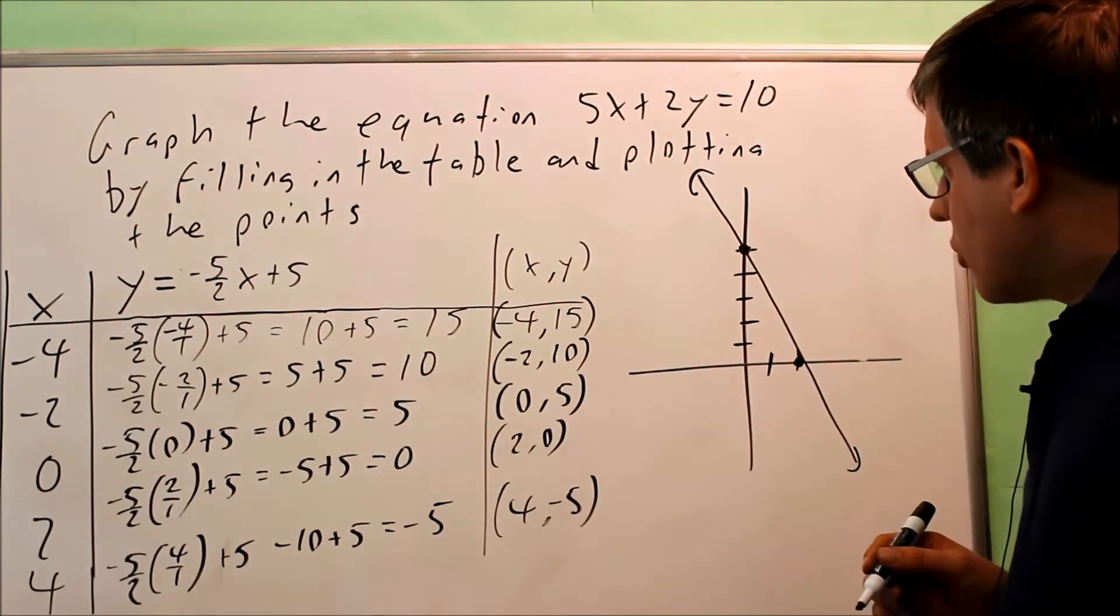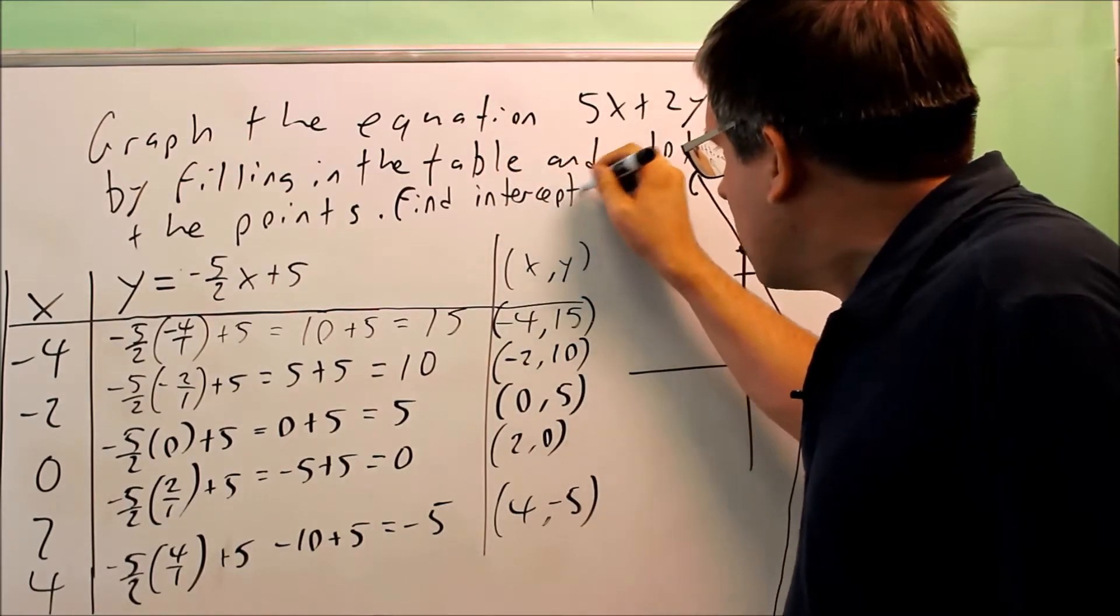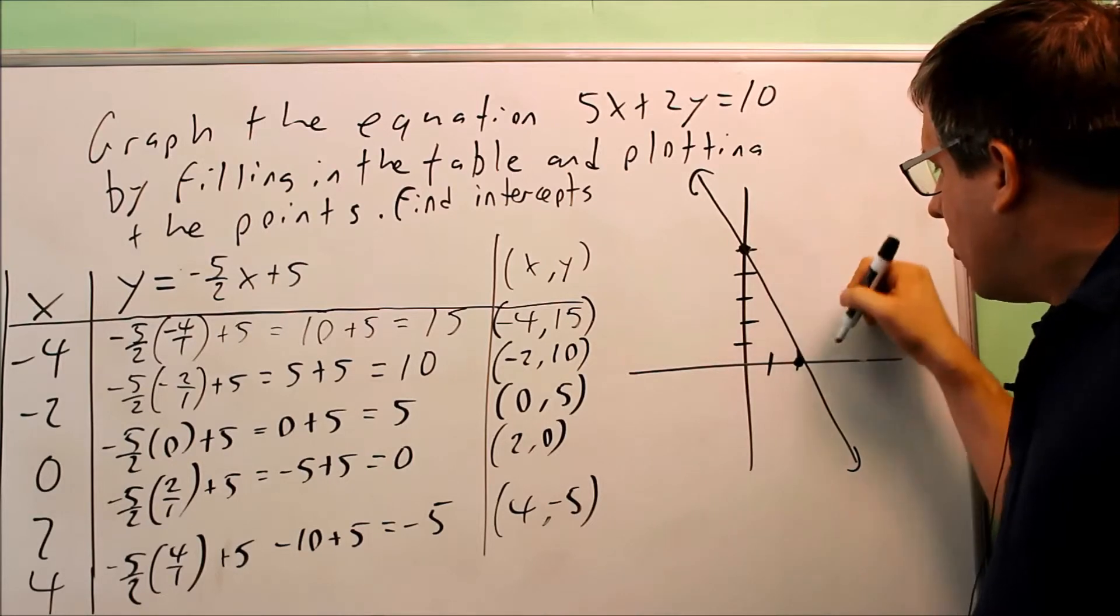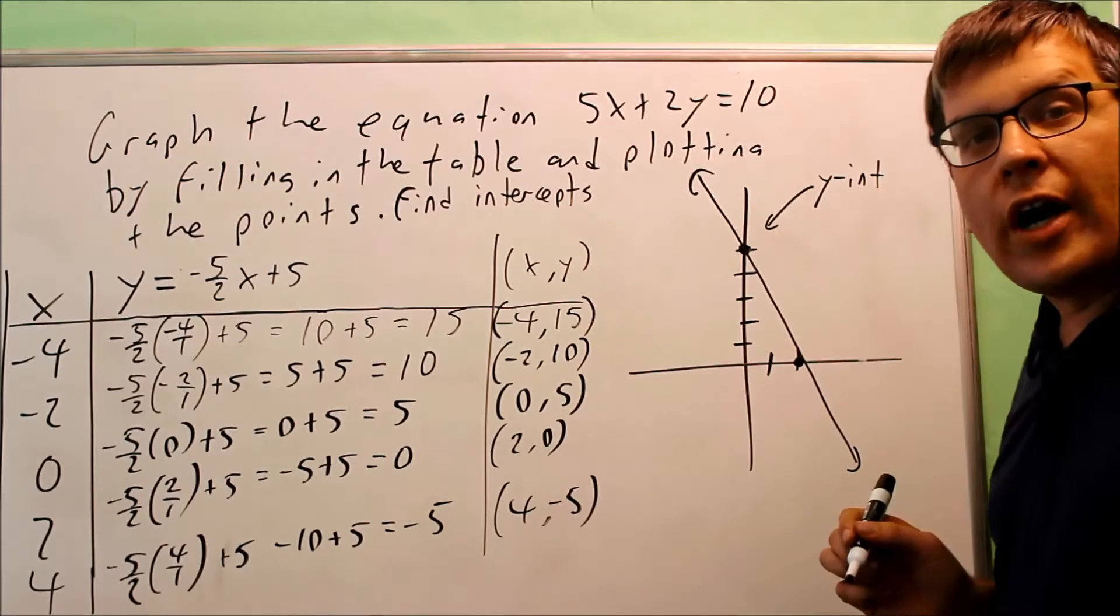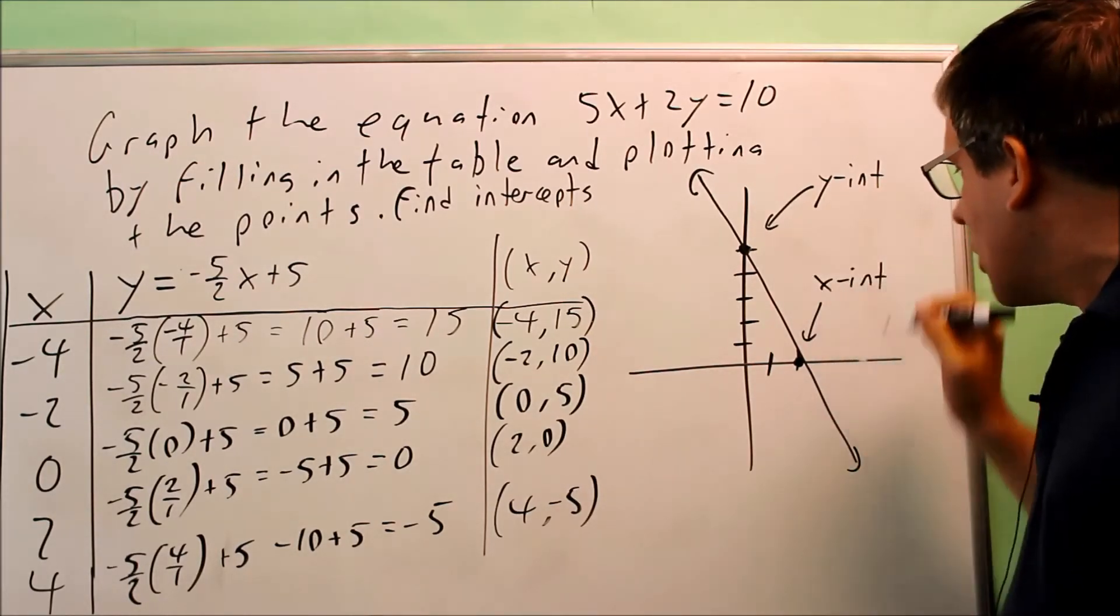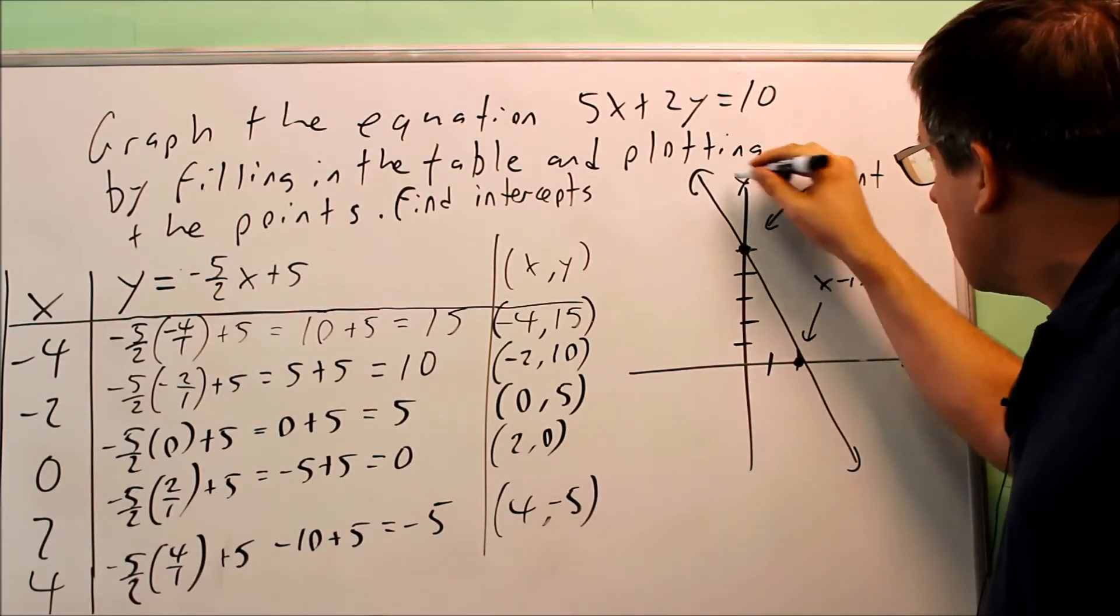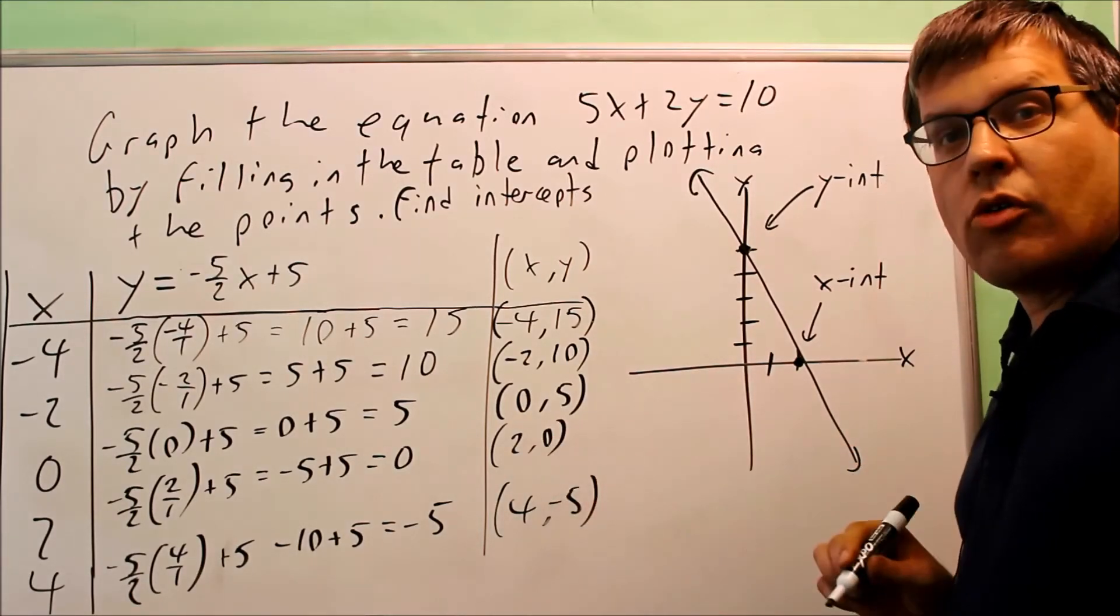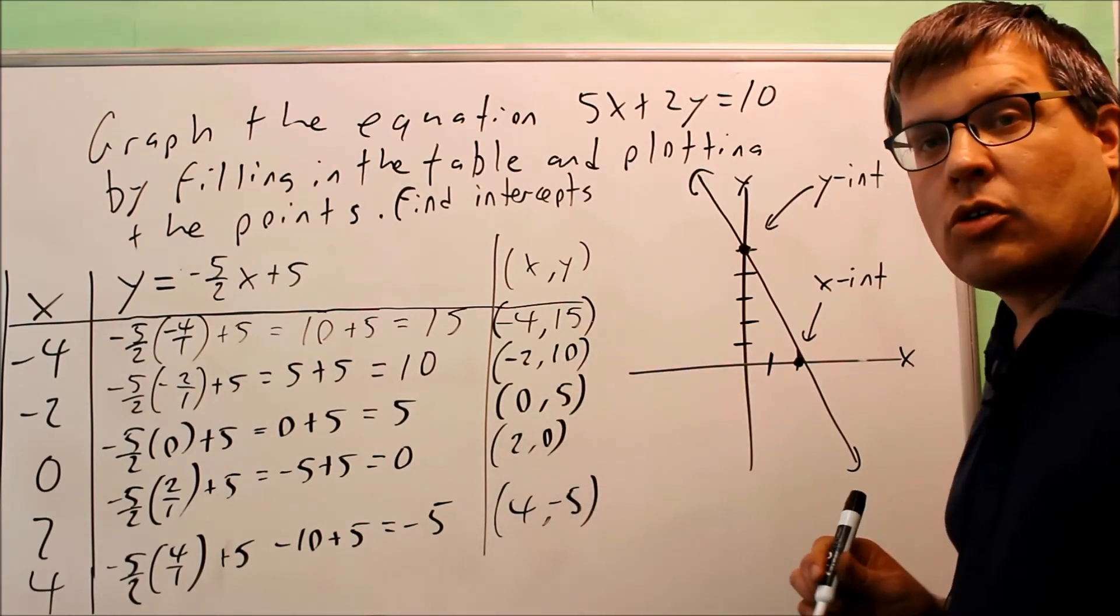Now, suppose it says, find the intercepts. If I want to find the intercepts, I'm going to label them right here. So where it crosses the y-axis, this is going to be your y-intercept. Where it crosses the x-axis, this is going to be called the x-intercept. Where it crosses the horizontal or the x-axis. So if you want to list them out as points, you would say that 2, 0 is going to be your x-intercept and 0, 5 is going to be your y-intercept.